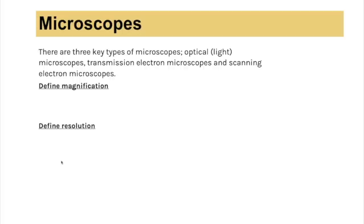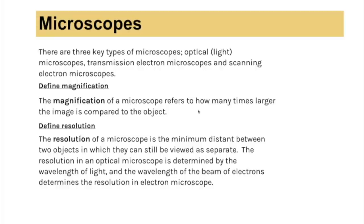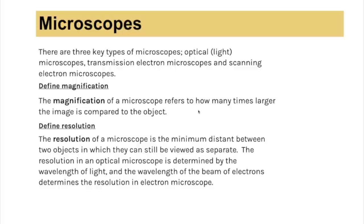There are a couple of key definitions and three main types of microscope to know. Optical microscopes use light and are used in schools. You also have transmission electron microscopes and scanning electron microscopes. Magnification is how many times larger the image is compared to the object. Resolution is the minimum distance between two objects at which they can still be viewed as separate. The resolution of an optical microscope is determined by the wavelength of light, while for electron microscopes it is determined by the wavelength of the electron beam — that shorter wavelength gives a much higher resolution.